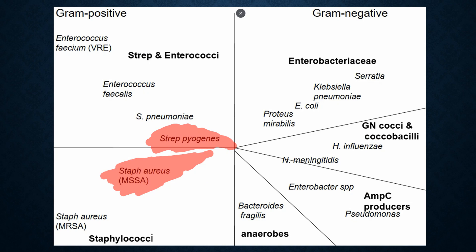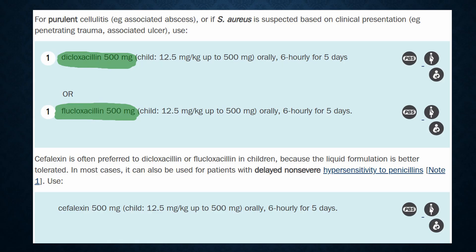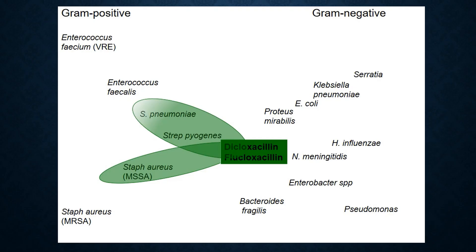Now let's look at drugs that also strongly cover Staphylococcus aureus, which are used for purulent cellulitis — for example, when it is associated with an abscess. We use these penicillins: dicloxacillin 500 mg and flucloxacillin 500 mg. Comparing with Penicillin V, we have a broader spectrum.